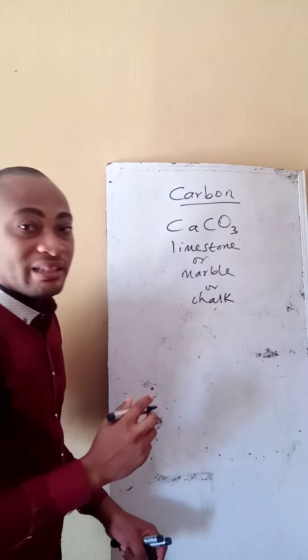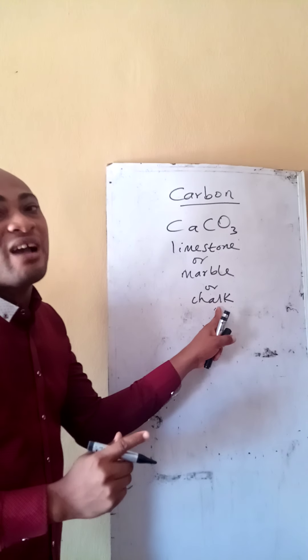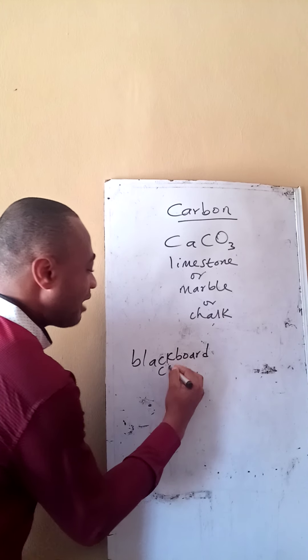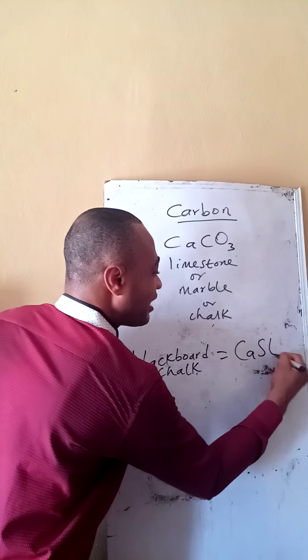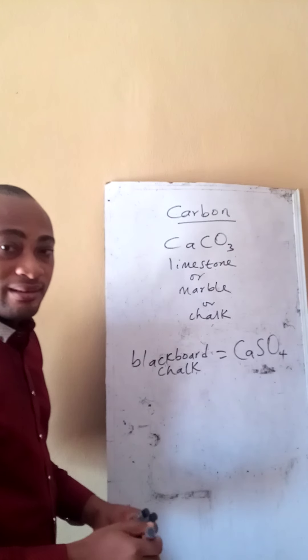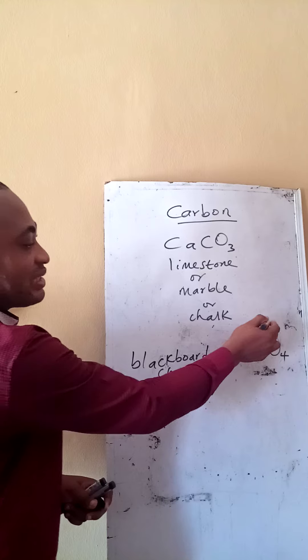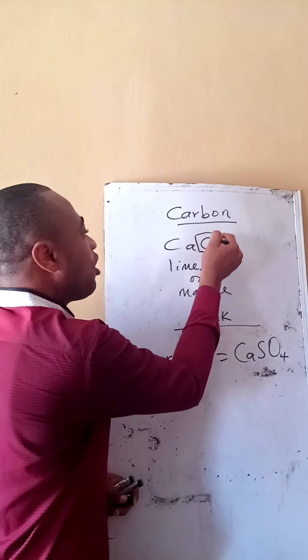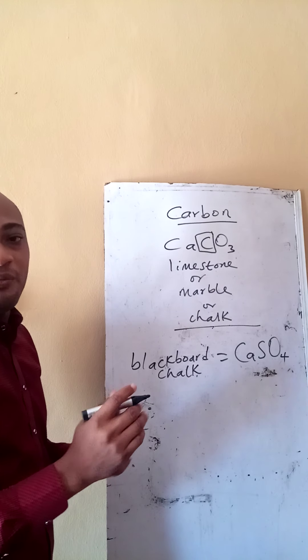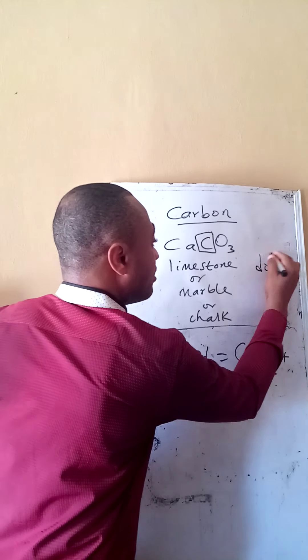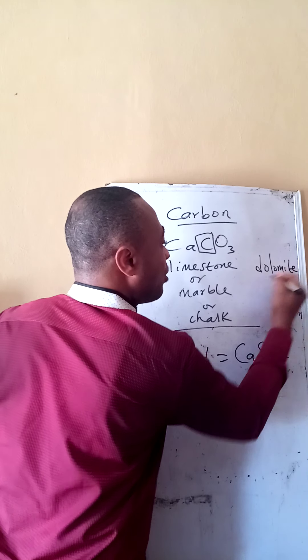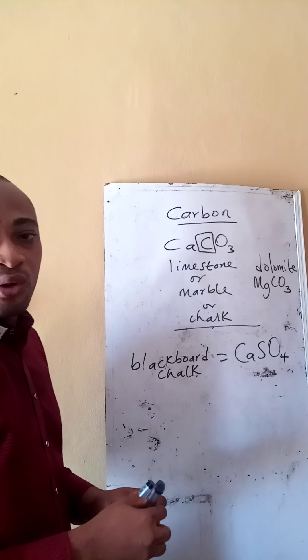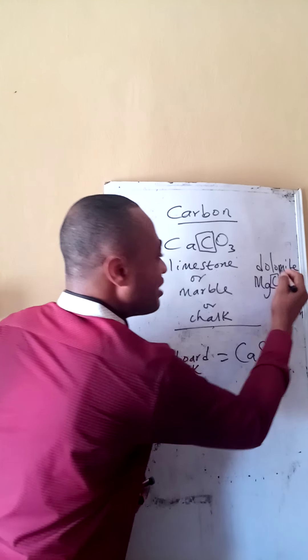For example, look at limestone, which is also called marble or you call it chalk. Take note, this is not your blackboard chalk. The blackboard chalk has this formula. The blackboard chalk is actually calcium tetraoxosulfate six, CaSO4. That is the chalk used on the blackboard, but this is not the blackboard chalk. Our limestone, you see carbon is a major constituent of your limestone. Even in dolomite, we have dolomite which is just magnesium trioxocarbonate four. You see carbon is an essential part of this.